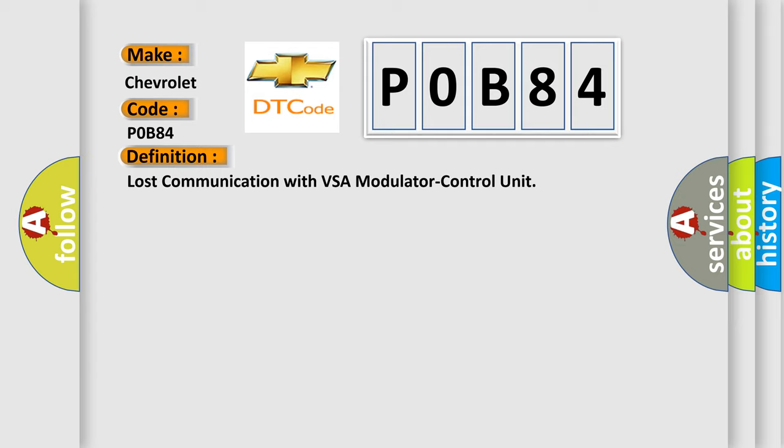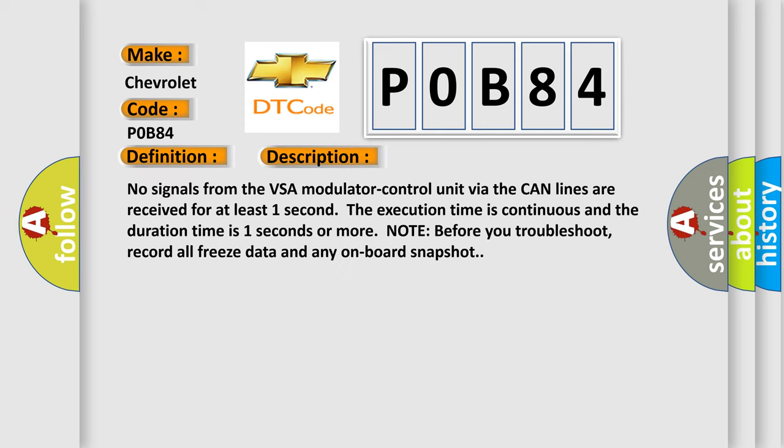And now this is a short description of this DTC code. No signals from the VSA modulator control unit via the CAN lines are received for at least one second. The execution time is continuous and the duration time is one second or more. Note before you troubleshoot, record all freeze data and any onboard snapshot.